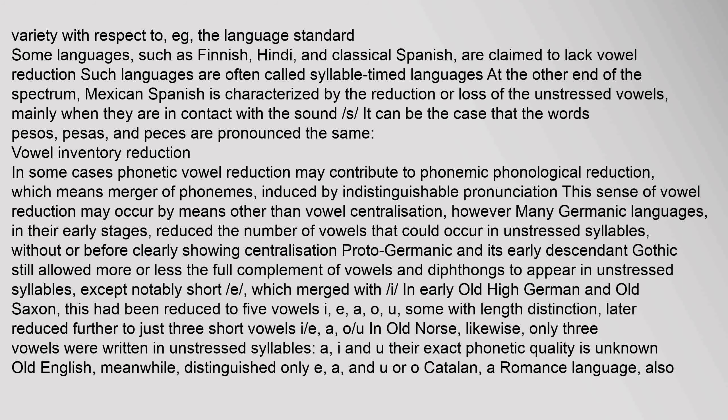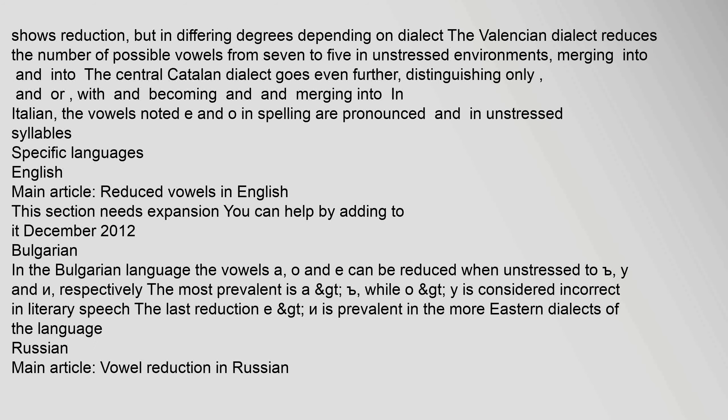In Old Norse, likewise, only three vowels were written in unstressed syllables: a, i, and u — though their exact phonetic quality is unknown. Old English, meanwhile, distinguished only e, a, and u or o. Catalan, a Romance language, also shows vowel reduction, but in differing degrees depending on dialect. The Valencian dialect reduces the number of possible vowels from seven to five in unstressed environments, merging certain vowels. The central Catalan dialect goes even further, distinguishing only two vowels, with others merging. In Italian, the vowels noted as /e/ and /o/ in spelling are pronounced differently in unstressed syllables.